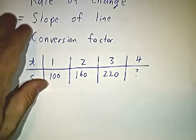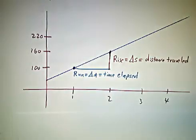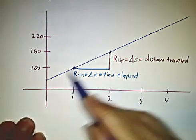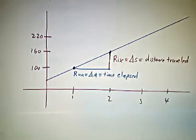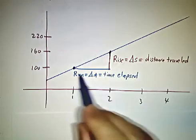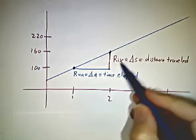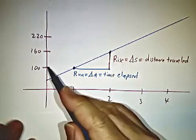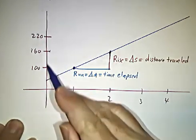This is a pretty easy problem. You plot where you are as a function of time. You get a straight line. Between 1 o'clock and 2 o'clock, how far did I go? Well, I went from mile marker 100 to mile marker 160, that's 60 miles.